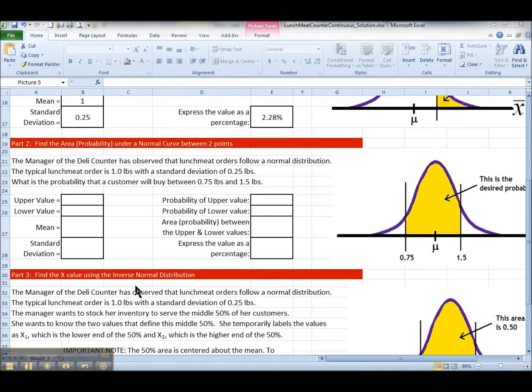So on to part two of this assignment where we're finding the area, and area is probability underneath the curve, a normal curve, but this time between two points. Last time we just used one point.